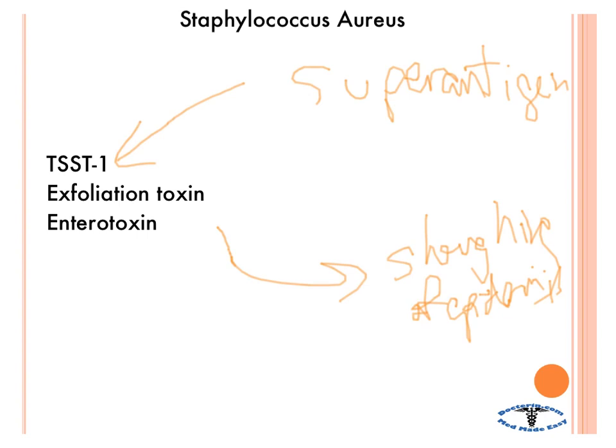The last important toxin is the enterotoxin. The interesting part is that you only get ill because it's preformed. So let's say you're out on a picnic and you eat some coleslaw and get enteritis — it's from this preformed enterotoxin that Staphylococcus aureus makes. And it has a very rapid onset.